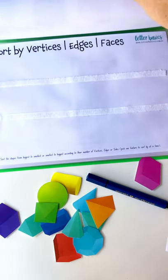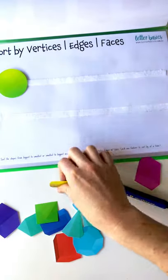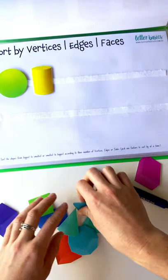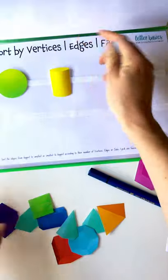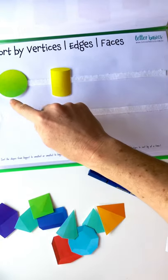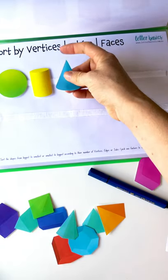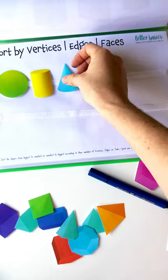All right, then sort by vertices, edges, and faces. So, oh hang on, I reckon cone would be first. You're not going to do all three obviously, pick one. So if you go vertices, this one's got none. The cylinder has no vertices, so no corners.